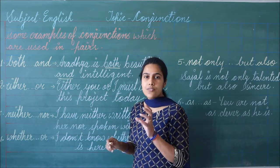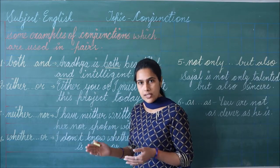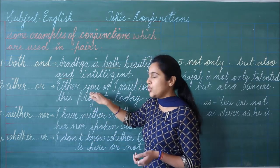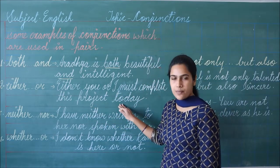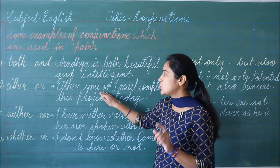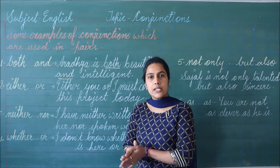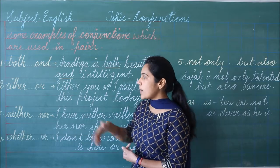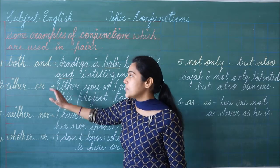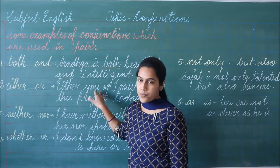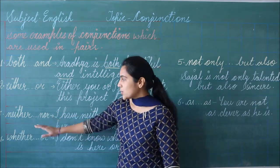Then the second one is 'either...or'. Either or एक positive sense में use होते हैं — जैसे हम हिंदी में बोलते हैं 'या तो ये या फिर ये'. Like: Either you or I must complete this project today. Means, या तो तुम या फिर मैं — आज इस project को complete करना होगा. तो जब हम कोई positive sense में choice देते हैं तो हम 'either...or' का use करते हैं. Either के साथ in pair हमेशा 'or' का use होता है.